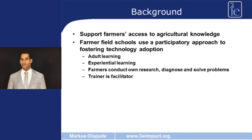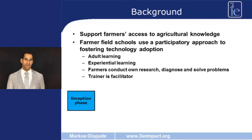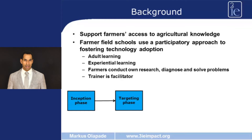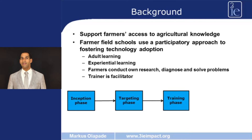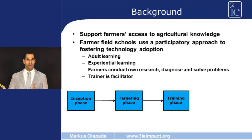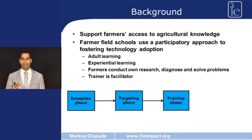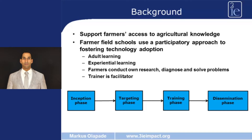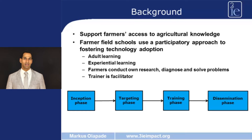Generally these projects go through different phases, starting with the inception phase where the curriculum is designed and the trainers are trained. In the next stage the farmer groups are set up and the training starts. The training usually goes over the period of one year and in weekly sessions the farmers are supported in each step of the agricultural cycle. Finally in the dissemination phase it is hoped that knowledge trickles from participant farmers to non-participant farmers.